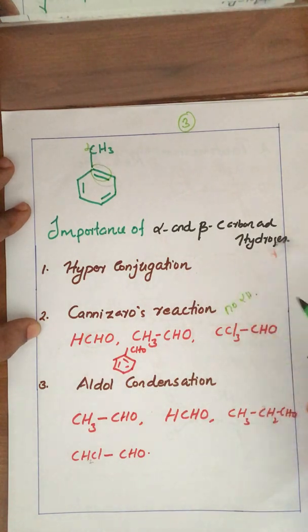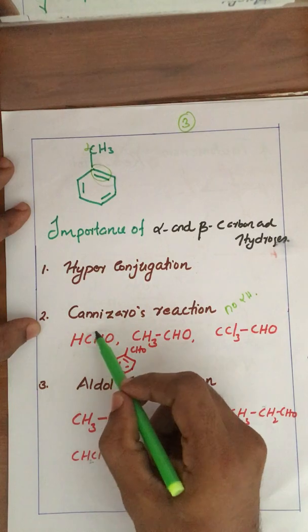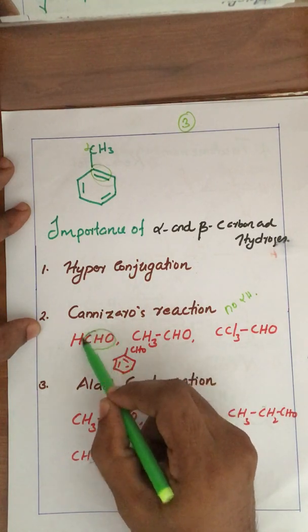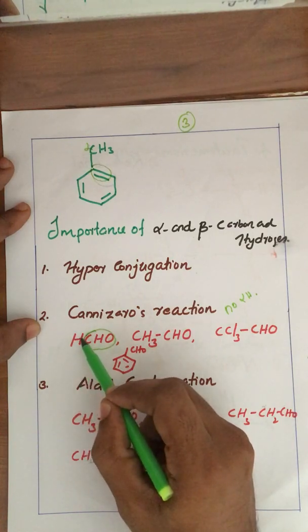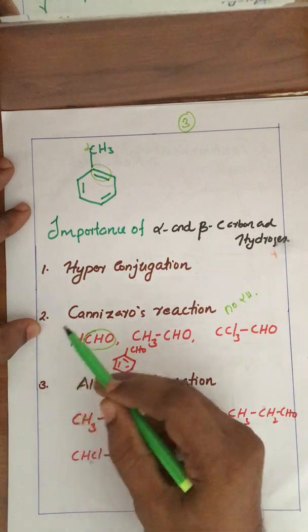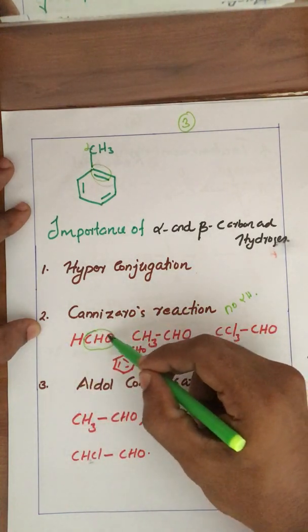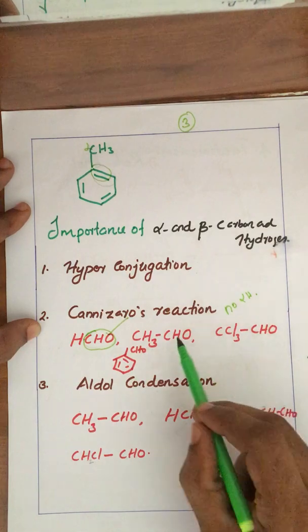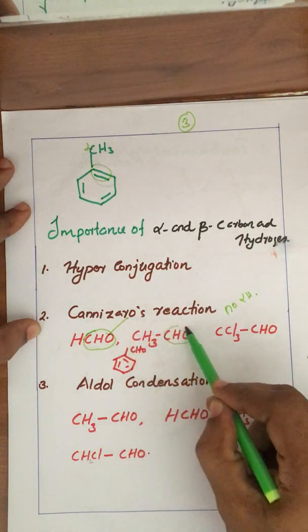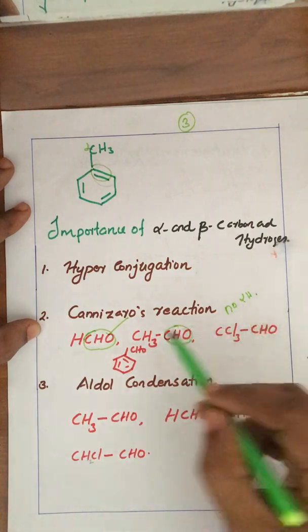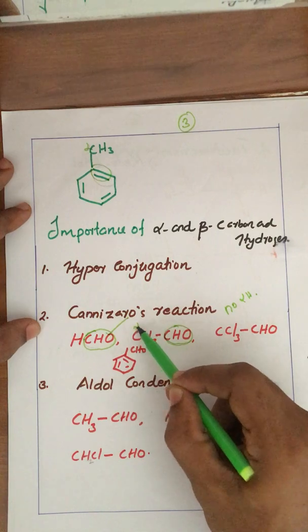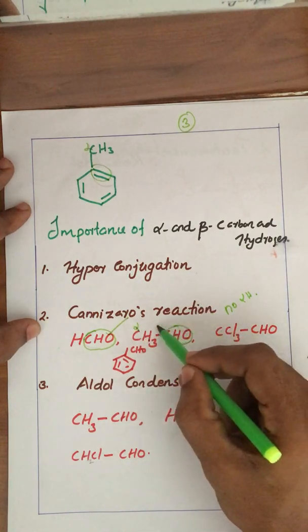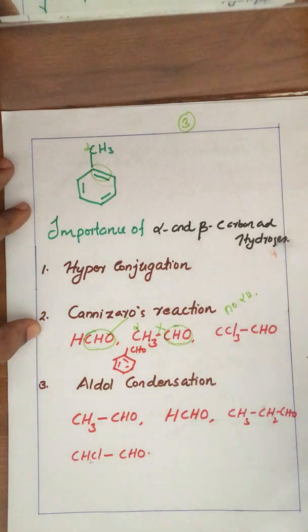In the case of HCHO (formaldehyde), the CHO group is the most important group. There is no carbon attached to this CHO group — that is, there is no alpha carbon atom, therefore there is no alpha hydrogen atom, and therefore this molecule can undergo the Cannizzaro reaction very easily. For CH3-CHO, this carbon is the alpha carbon atom and there is an alpha hydrogen, so this molecule does not undergo the Cannizzaro reaction.